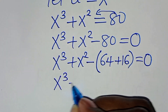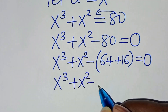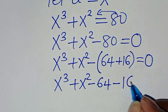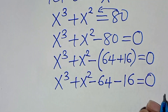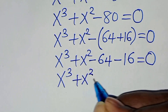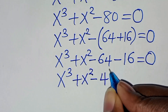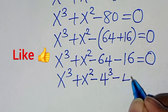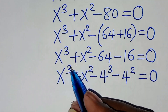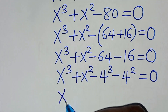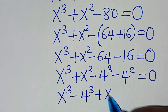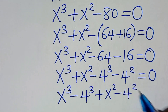We have x cubed plus x squared minus 64, then minus 16, equals 0. Now 64 is 4 to the power of 3 and 16 is 4 to the power of 2. So we can write this as x cubed minus 4 cubed, then plus x squared minus 4 squared, equals 0. We have two parts: the difference of two cubes and the difference of two perfect squares.